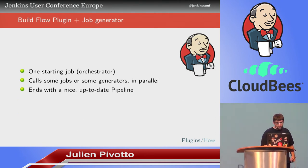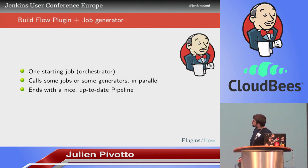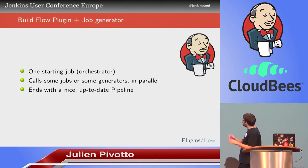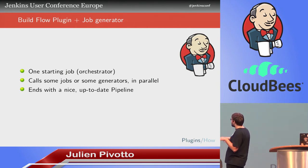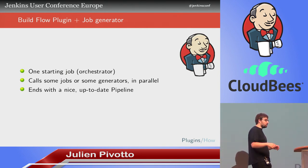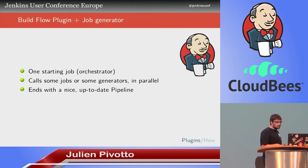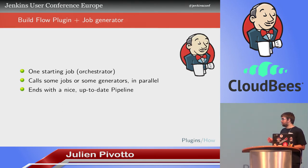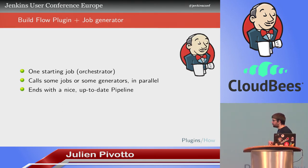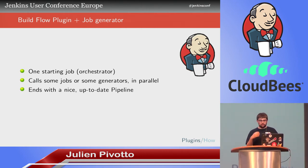When you combine both plugins, you have the starting job using the build flow plugin — it will call some jobs or some generators in parallel, and at the end you have a nice pipeline with unique jobs for your customer. Of course not all the jobs have to be unique, but if you have artifacts and such, it's more practical to just have unique jobs.